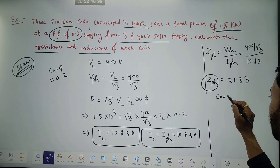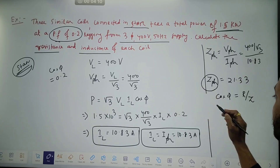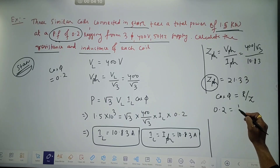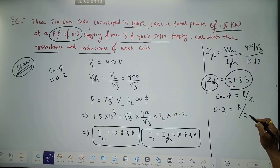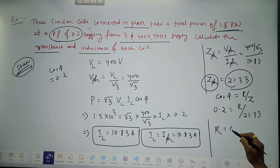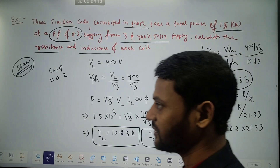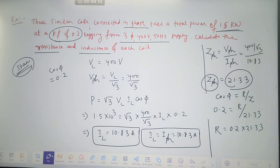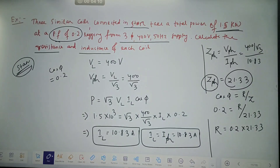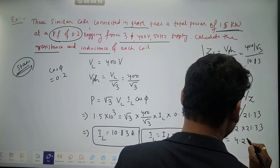First, we find out cos phi. Cos phi is R by Z. Cos phi is given as 0.2, and Z is 21.33 ohms, so we can find R. R is 0.2 into 21.33, which gives resistance R as 4.27 ohms.